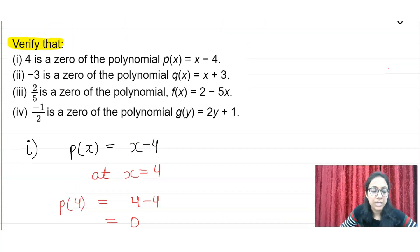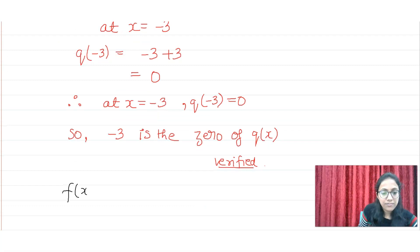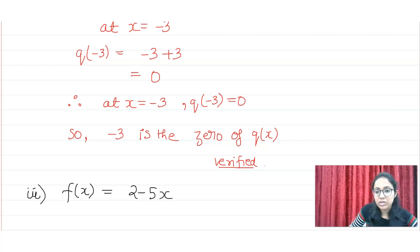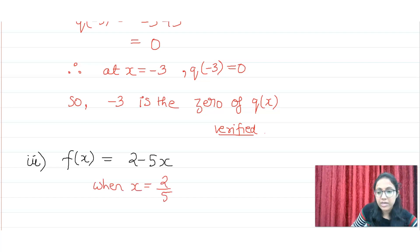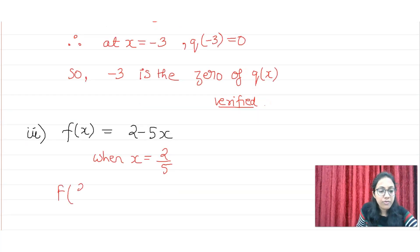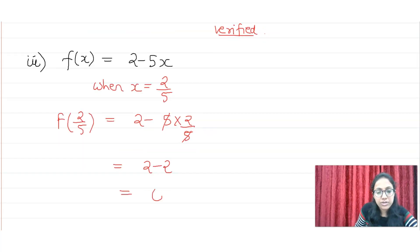Now let's go to the third part. In the third part, 2 by 5 is a zero of the polynomial f(x) equal to 2 minus 5x. We write f(x) equal to 2 minus 5x, and substitute x equal to 2 by 5. So f(2/5) equals 2 minus 5 multiplied by 2 by 5. The 5s cancel, giving 2 minus 2.